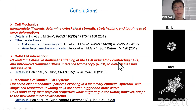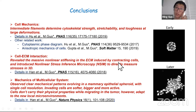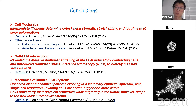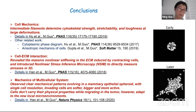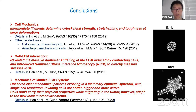To conclude: I talked about vimentin as the intermediate filament important for strength, stretchability, and toughness; how to probe cell-ECM interaction and the stiff shell cells create around themselves; and the mechanics in multicellular systems. For more details, please see those papers. Thank you very much.